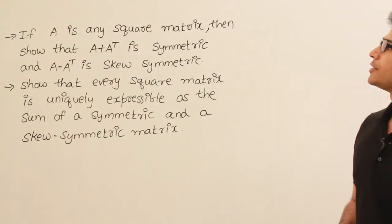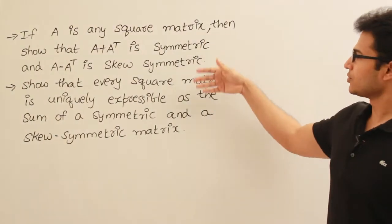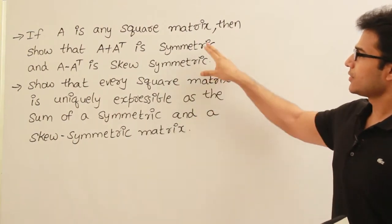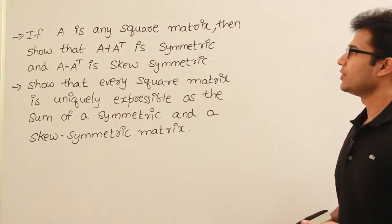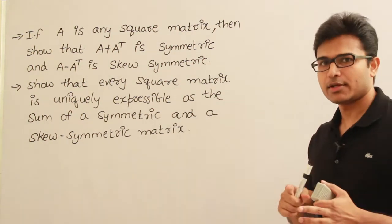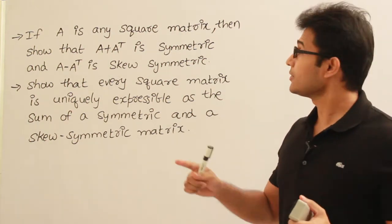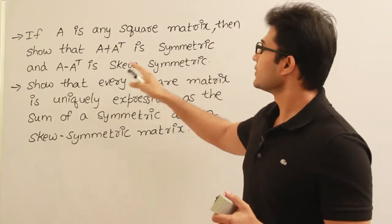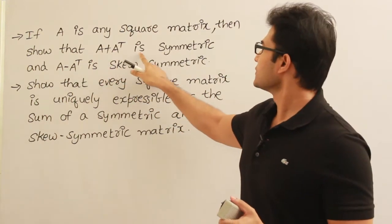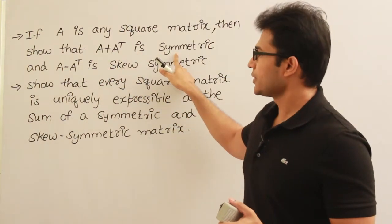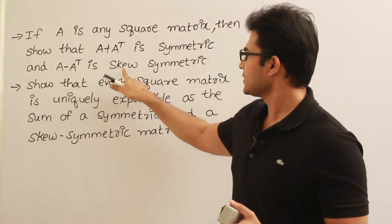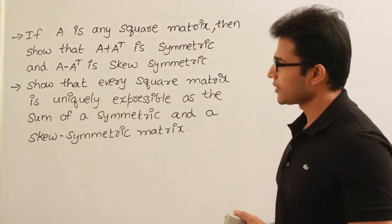These two examples are very important. I have given you two examples here. The first one is: if A is any square matrix, then show that A plus A transpose is symmetric and A minus A transpose is skew symmetric.